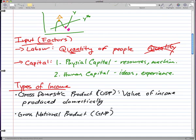And for Gross National Product, it is the income that is received, so income that is received by nationals of a country.